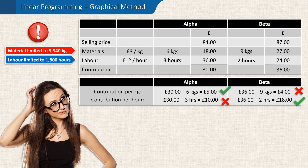But the contribution per labour hour is better for the beta. Had the contribution from material and labour been both better for one product only, you would simply make as much of that product as possible and none of the other. But in this example it isn't so clear-cut. However, we can use linear programming to determine the mix of products which produces the most contribution overall.